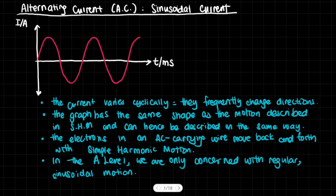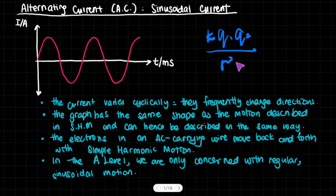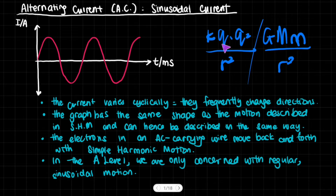For example, the force of attraction between two charges has a constant of proportionality times charge 1 times charge 2 divided by separation squared. The gravitational force between two masses is G·m·m over r². The form of these two is the same. This is why models describing gravitational attraction can describe electrostatic attraction — and similarly, we can take what we know about simple harmonic motion and apply it to alternating current.